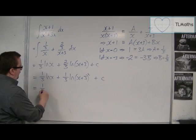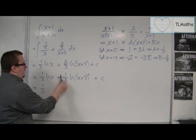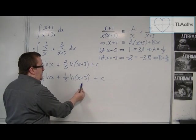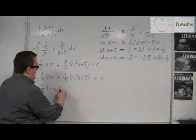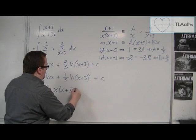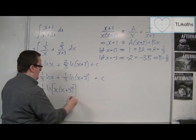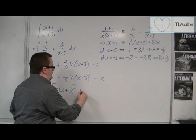Then I can write that as 1 third log x plus log of x plus 3 squared. And so I could combine that logarithm into log of x, x plus 3 squared. OK, plus that constant c.